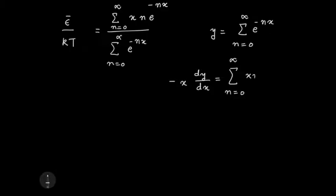The derivative comes inside and operates. I have x over here; when I take the derivative I get a minus n, so that minus cancels with the minus that I have taken on the left-hand side. So you see what I get here is the numerator of this expression. So in fact, minus x by y times dy by dx is nothing but epsilon bar by kT.